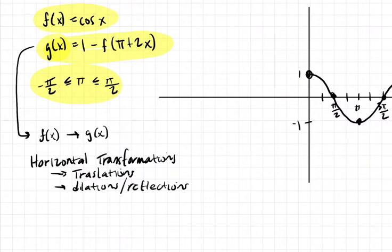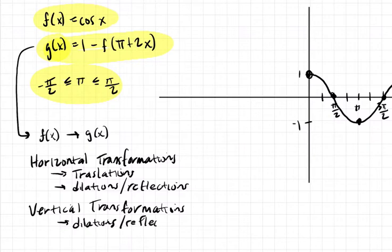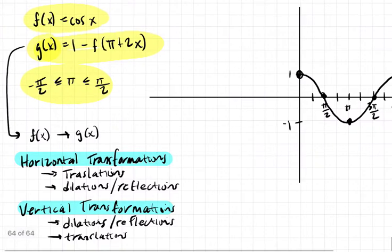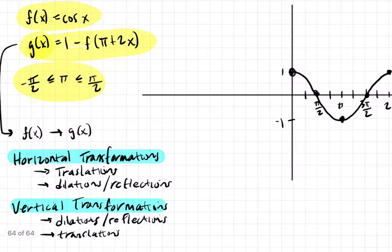Then we move over to our vertical transformations. And vertical transformations we'll treat in the opposite order. We'll start with dilations and reflections first, and then we'll move to translations. These aren't arbitrary choices. The fact that horizontal and vertical transformations are treated in opposite orders kind of mirrors everything else that we study about them.